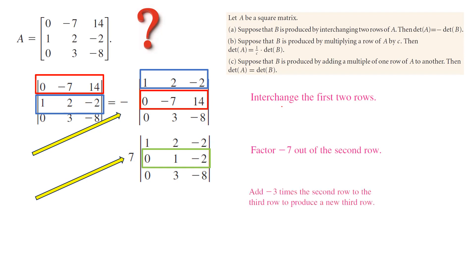And now you're going to add negative 3 times the second row to the third row, because we want to make this guy equal to 0. So let us begin. 7 stays the same. This is your first row. This is your second row. And adding negative 3 times the second row to the third row gives you 0, 0, and negative 2.